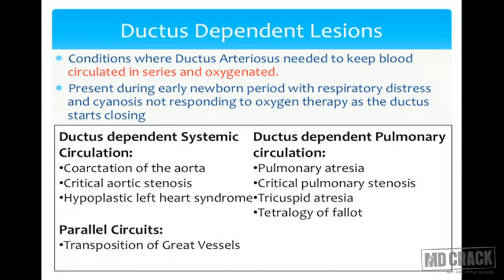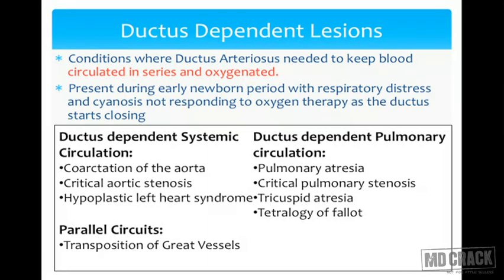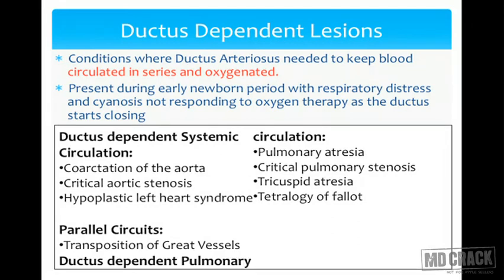In ductus-dependent pulmonary circulation, the pulmonary vessels are fed by the ductus — blood flows from the aorta to the pulmonary artery. In ductus-dependent systemic circulation, blood flows from the pulmonary artery through the ductus into the aorta. Transposition of great vessels creates parallel circuits with no communication, and this is also a ductus-dependent lesion. These lesions usually present during the neonatal period; as the ductus arteriosus starts closing, these children develop severe problems and cardiac failure.